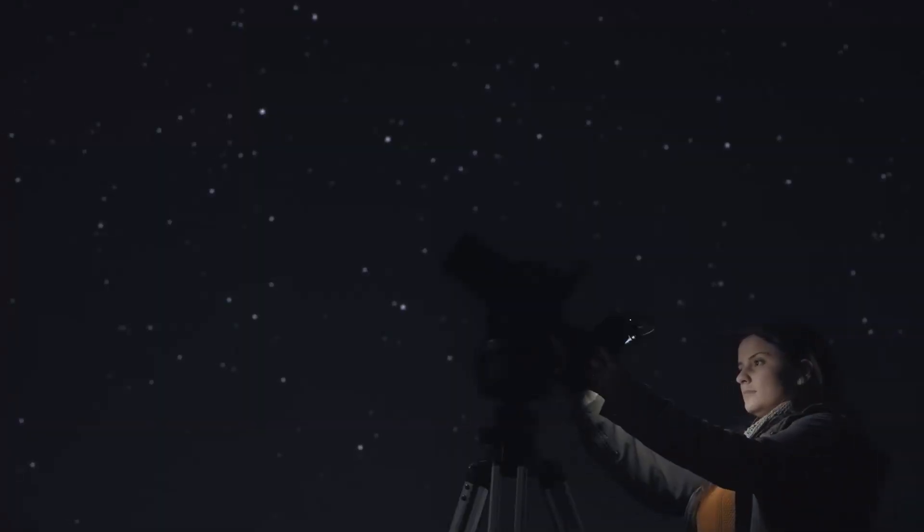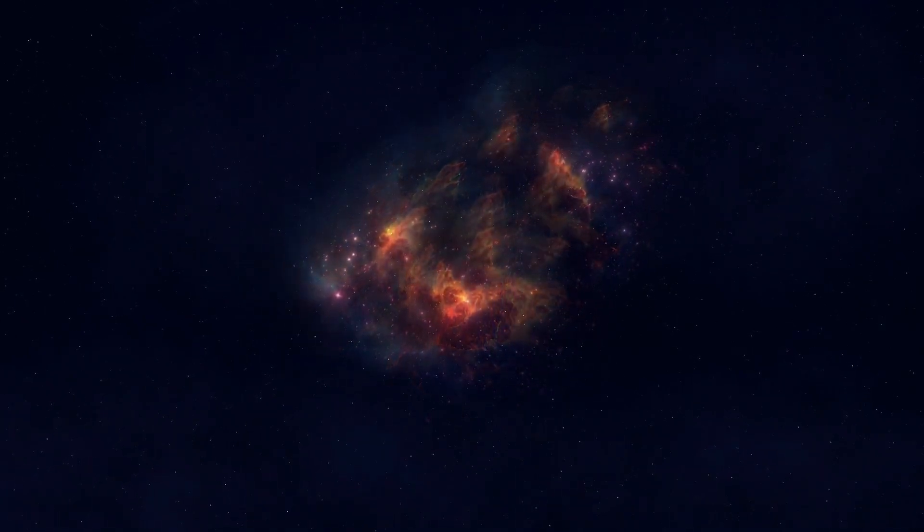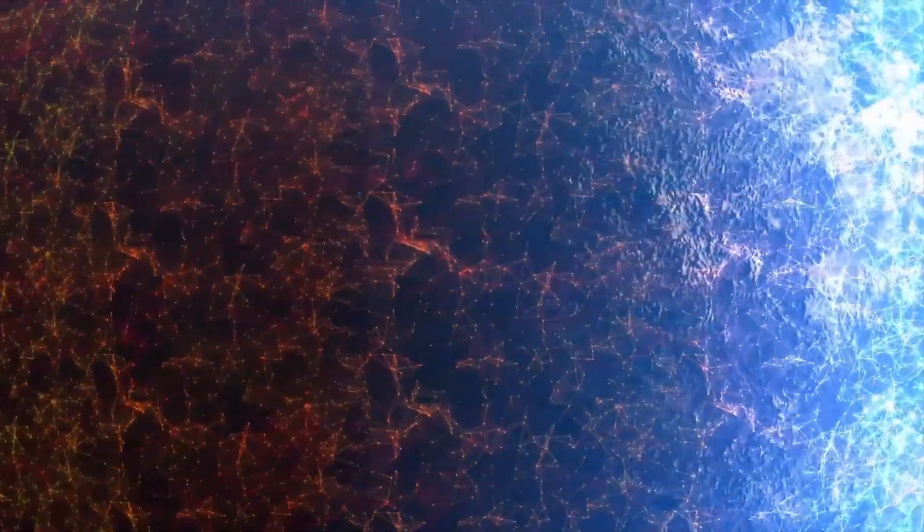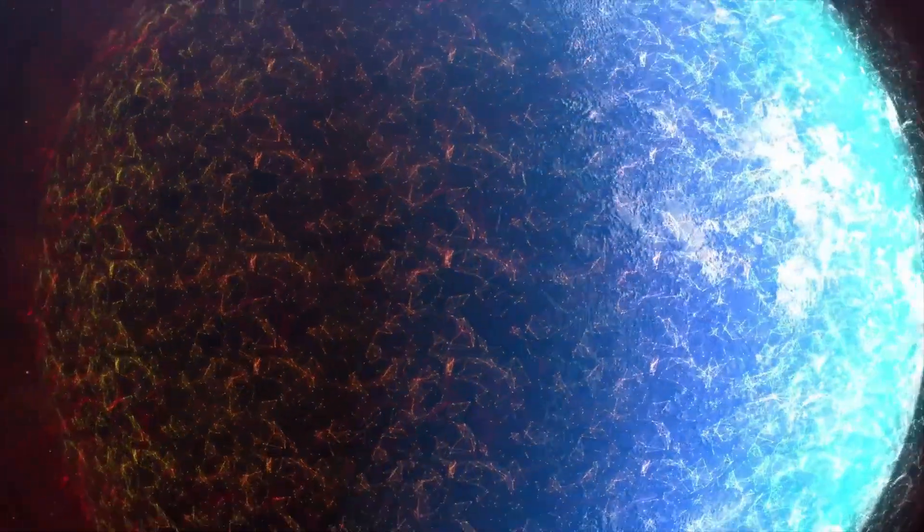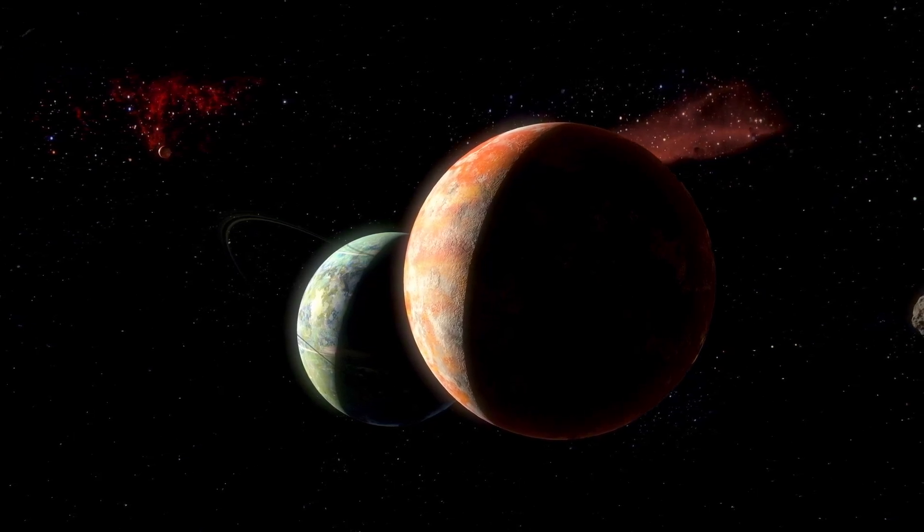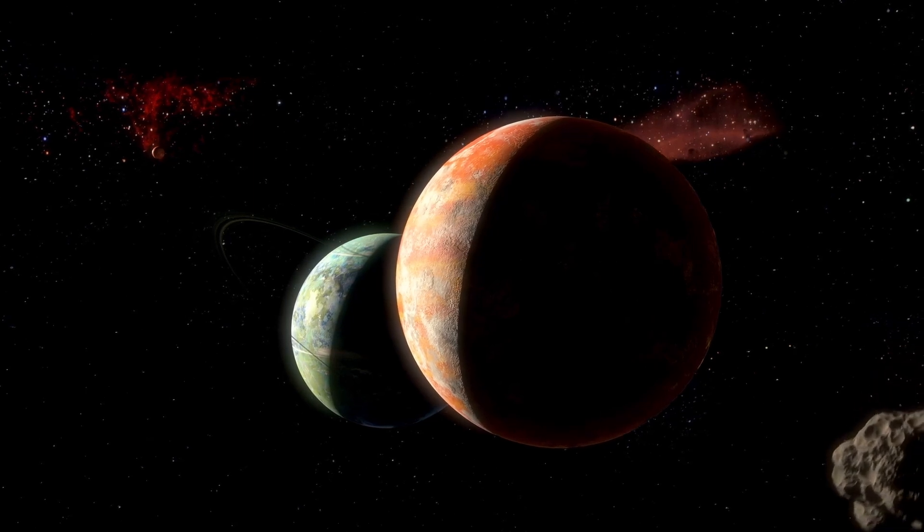One of the most fascinating things about Proxima b is how it's tidally locked, meaning one side always faces its sun while the other side is stuck in permanent darkness. That creates insane temperature differences. One half is constantly baked in sunlight while the other is frozen in eternal night. Life in those extremes sounds impossible, right? Maybe not.